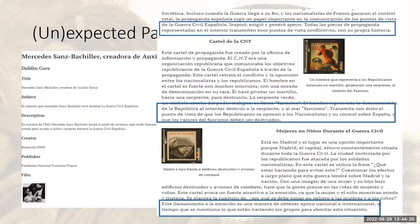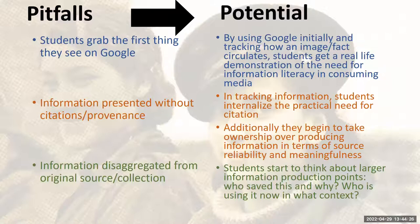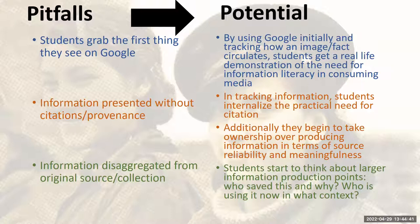That was kind of a really sort of aha moment to suggest that maybe we can do a little bit more with digital projects than I had initially thought. Some of the things we might see as pitfalls of digital scholarship can be turned into potentials. That first pitfall is the one we all know: students grab the first thing they see on Google. I would suggest that instead, if we see this as a potential, by using Google initially but then tracking how an image or fact circulates, students get a real-life demonstration of the need for information literacy and consuming media.